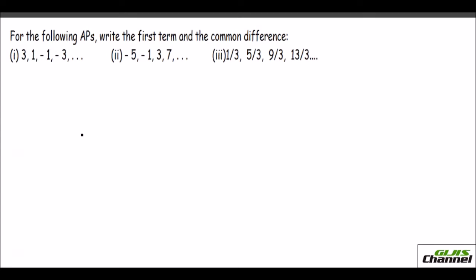Now let's move on to the next type. For the following APs, write the first term and the common difference. In the previous problem they gave you the first term and common difference; here the series is given and you need to find them. Since they say 'for the following APs,' you don't need to check whether it's an AP. For the first question, the first term is 3, and for the common difference D, take 1 minus 3, which gives negative 2.